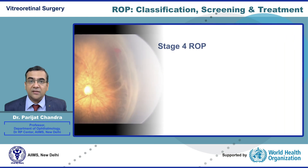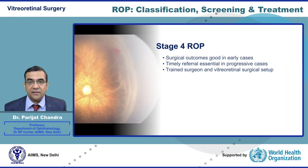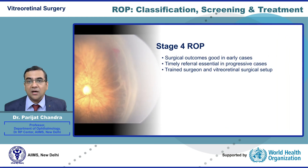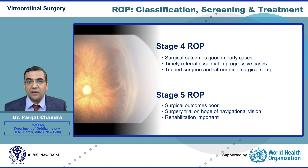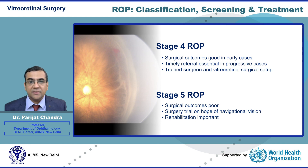Vitreoretinal surgery is done in advanced cases. Surgical outcomes are good in stage 4 ROP; however, timely referral is essential in progressive cases, and a trained surgeon and vitreoretinal surgical setup are needed. In stage 5 ROP, surgical outcomes are poor, and a surgical trial is sometimes done with the hope of obtaining navigational vision. Rehabilitation is important in these cases.